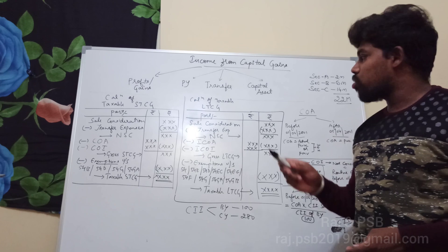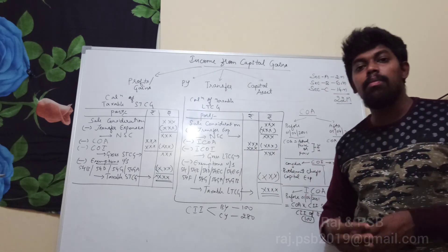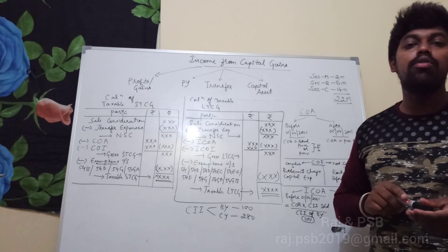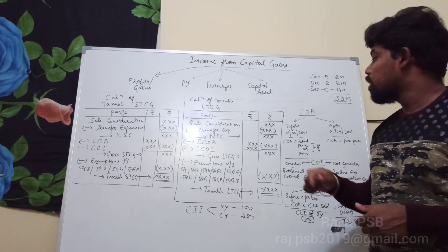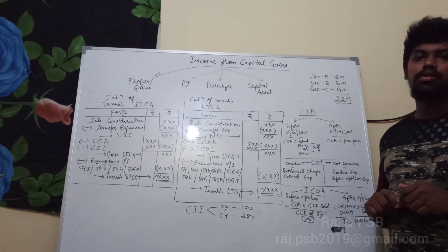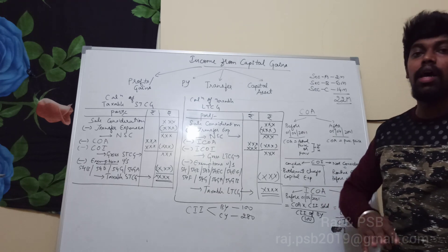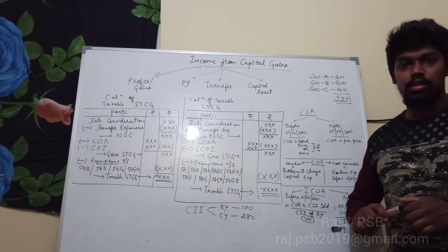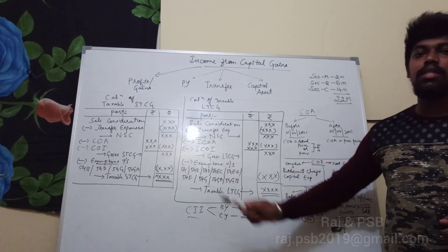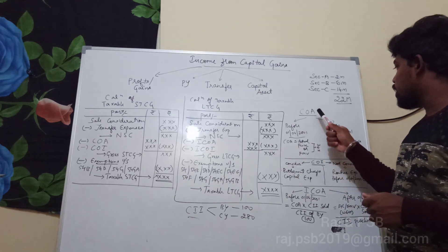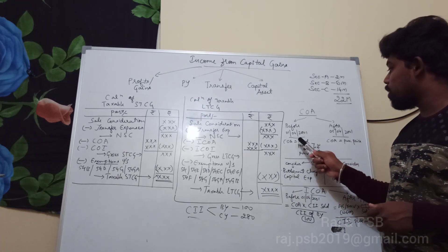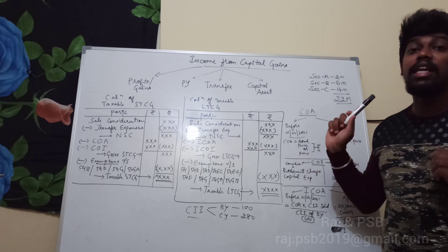The next topic is cost of acquisition — the cost incurred to acquire an asset. This is divided into two criteria: before 1/4/2001 and after 1/4/2001. The government has prescribed this base date. For the period before 1/4/2001, we will be using the CII table — the cost of inflation index table — to calculate the cost of acquisition.